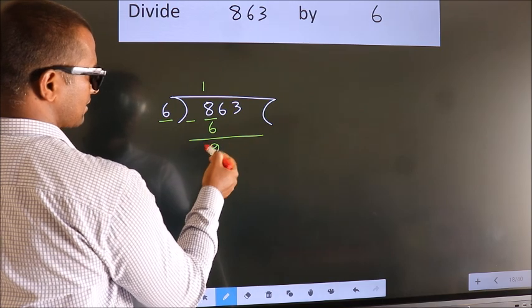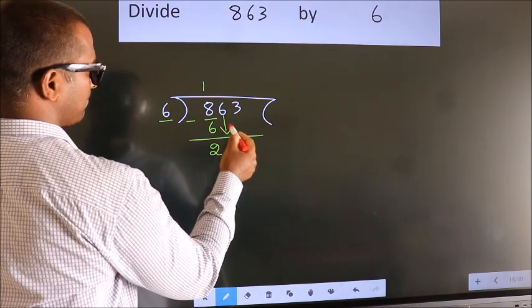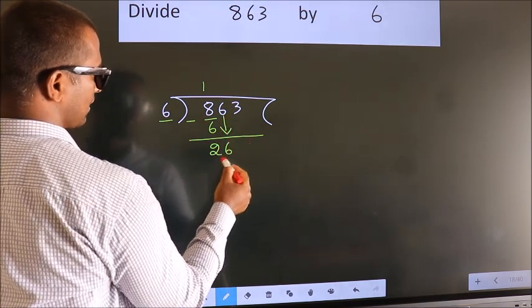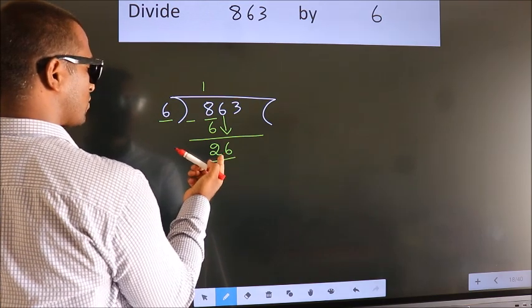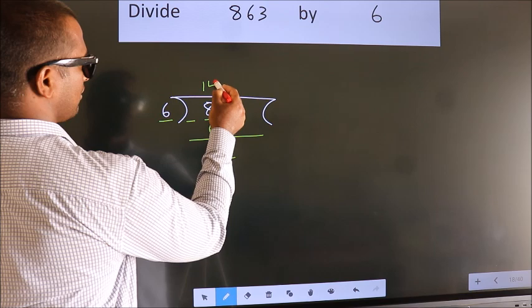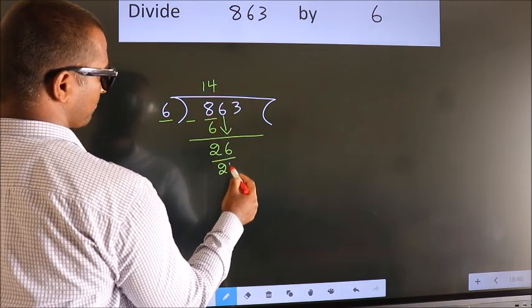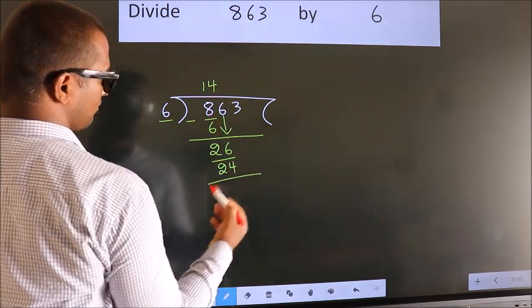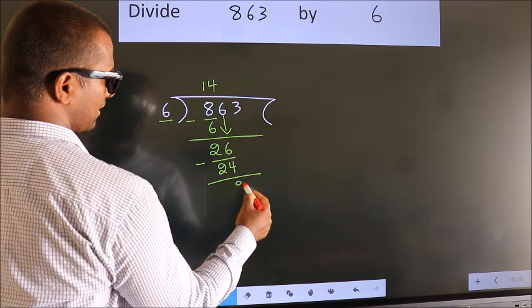After this, bring down the beside number. So 6 down, so 26. A number close to 26 in the 6 table is 6 times 4 equals 24. Now we subtract and get 2.